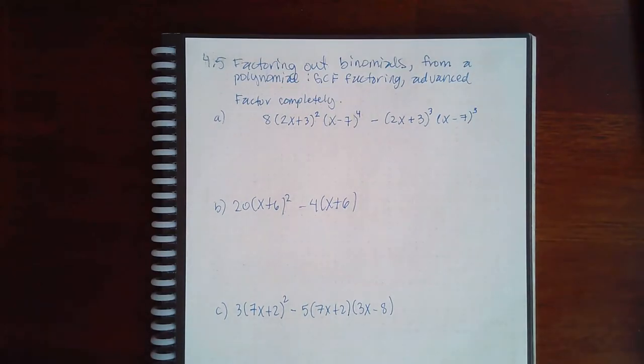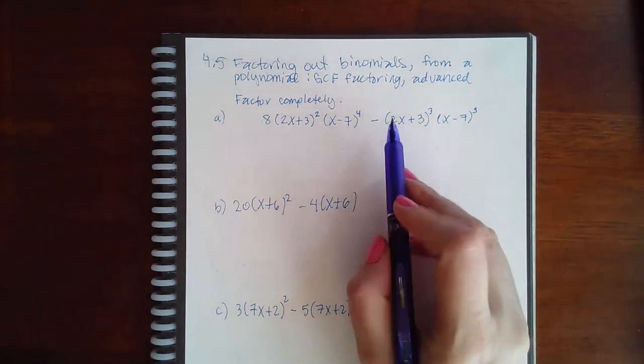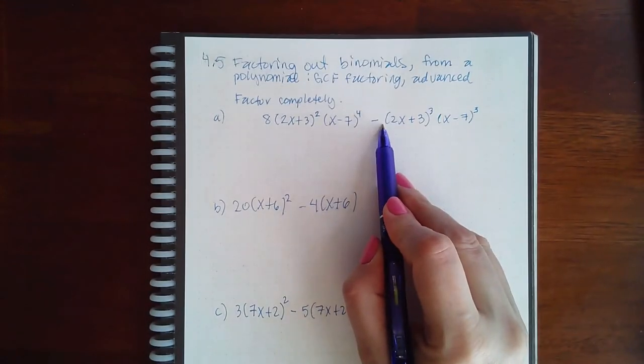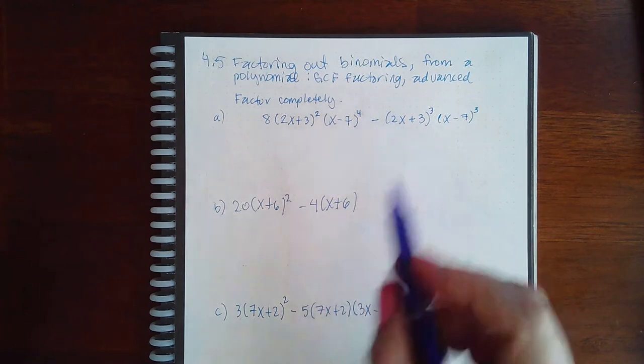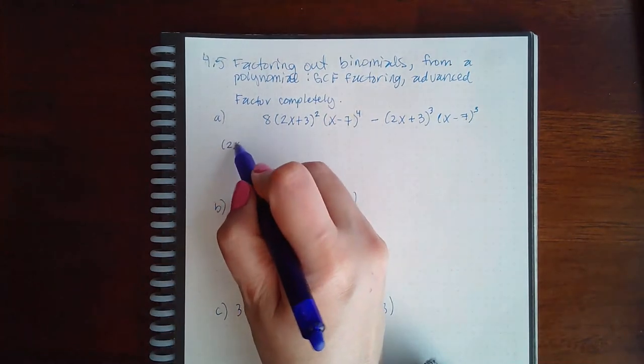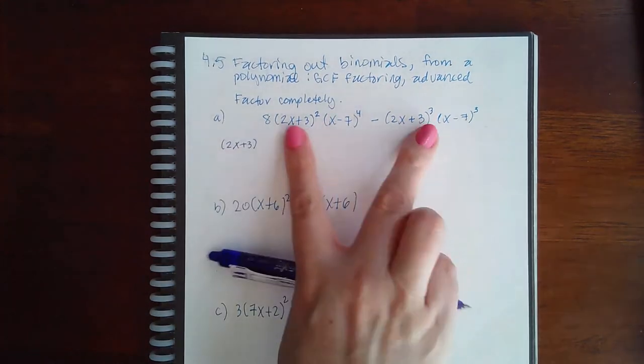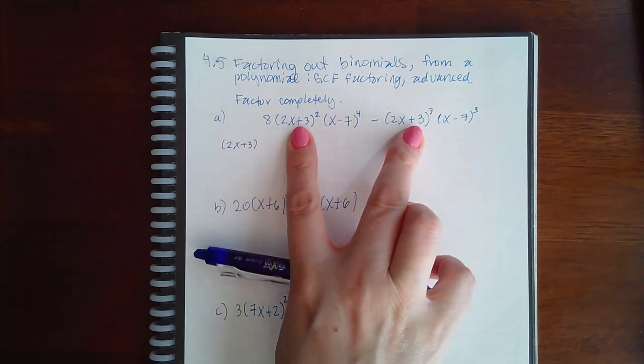So here we have factoring out binomials from a polynomial: GCF factoring advanced. So we want to take out a GCF. Now notice this one doesn't have a coefficient in the front, so I cannot take out a GCF as a coefficient. I can take out a 2x plus 3 because they both have a 2x plus 3 parentheses.